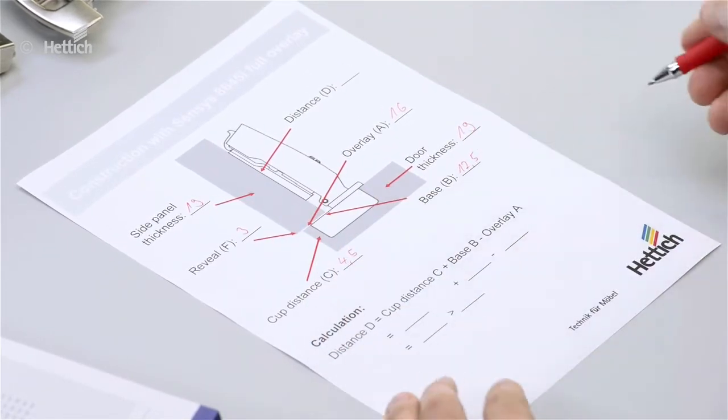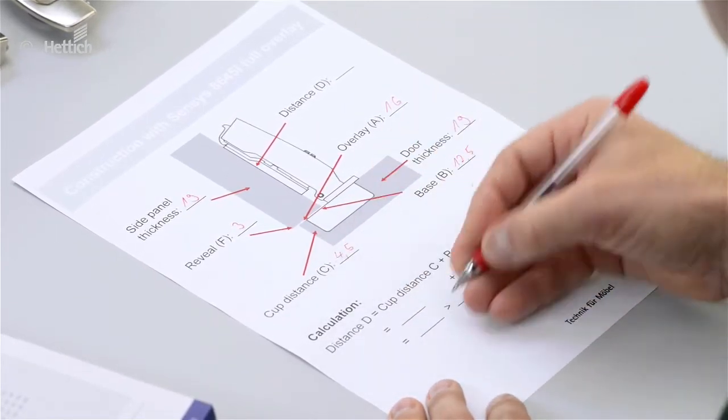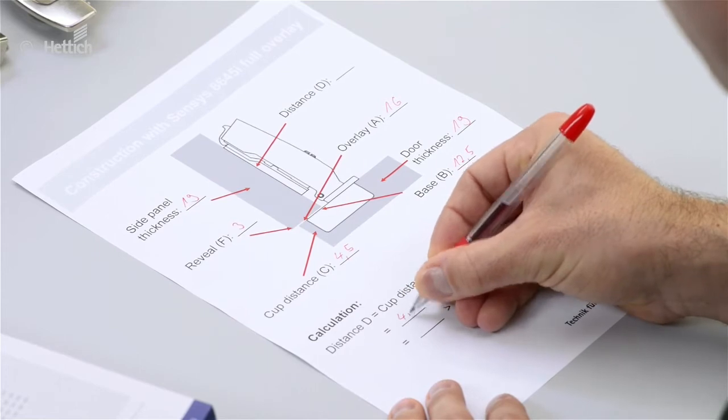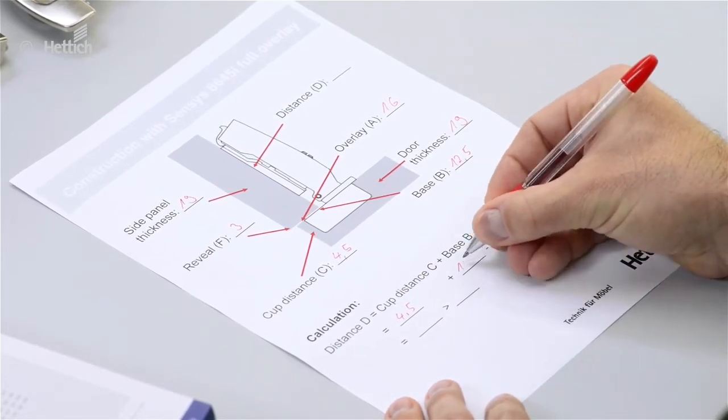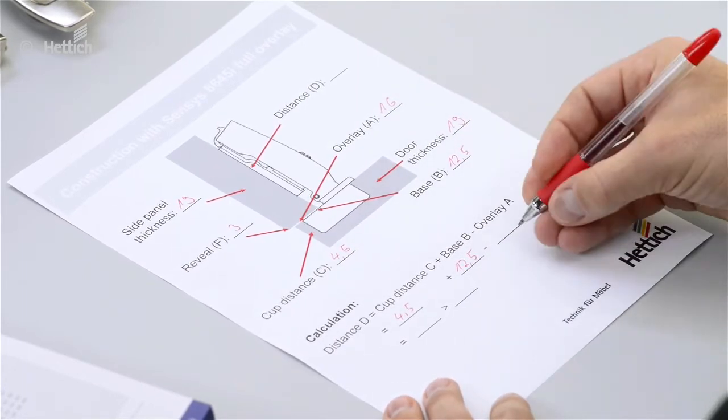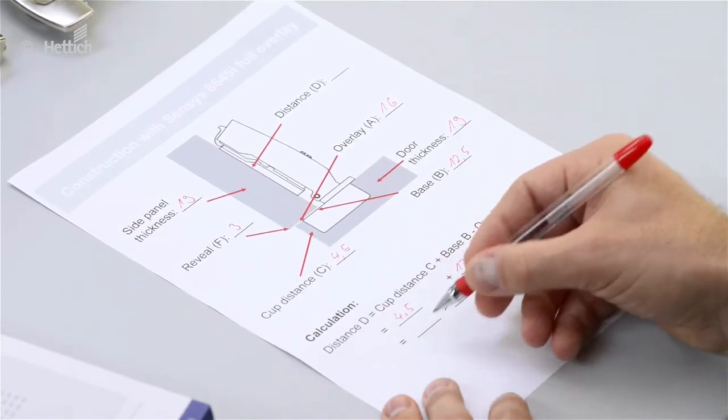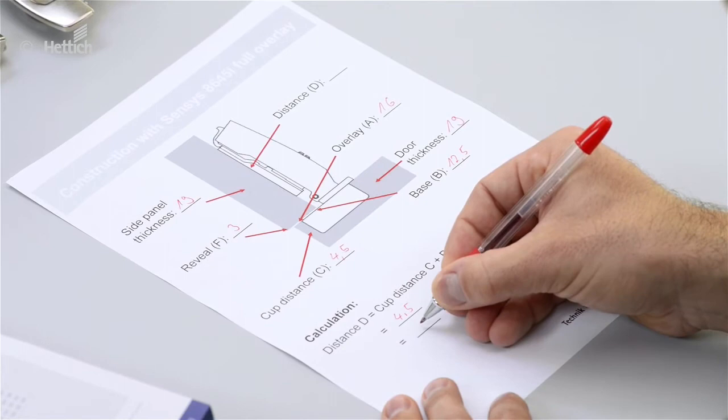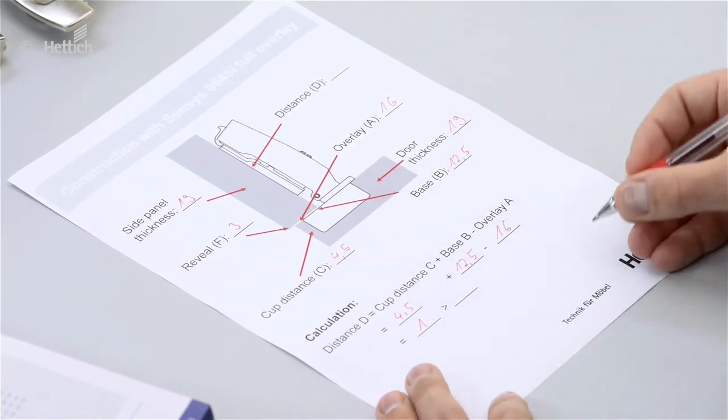Then we can go to the formula. So the cup distance C is 4.5, base B is 12.5, and the overlay is 16 millimeters. So we have a mounting plate distance of 1 millimeter.